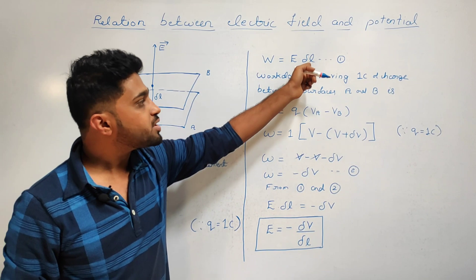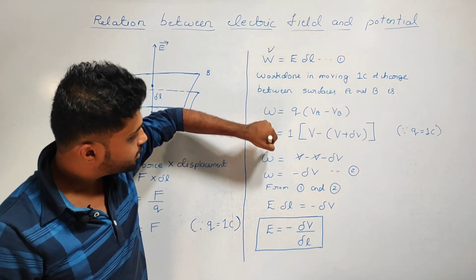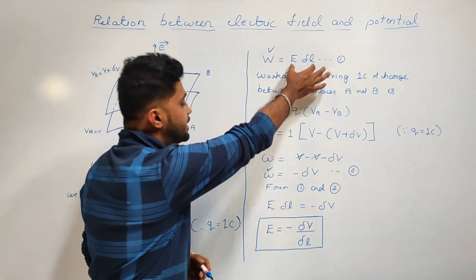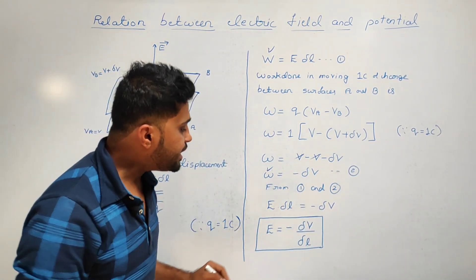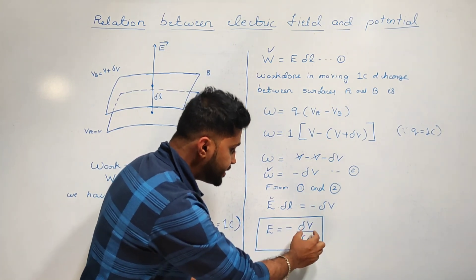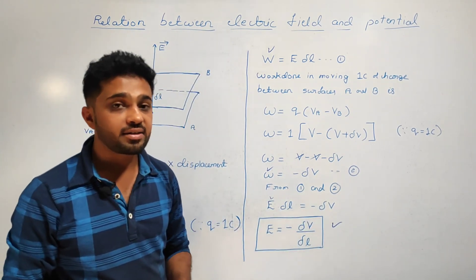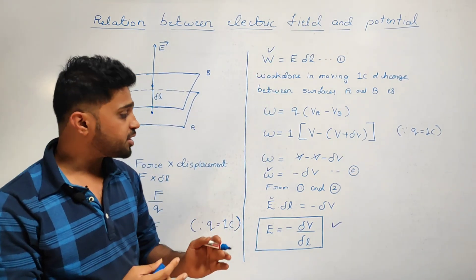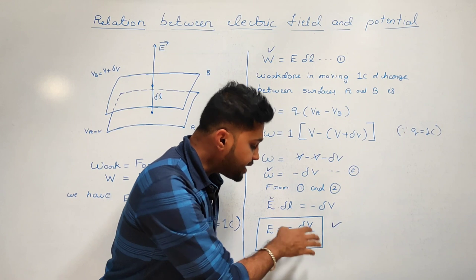Now comparing equation 1 and equation 2, the left-hand sides are both W. So E delta L equals minus delta V, which gives E equals minus delta V by delta L. This expression gives the relation between electric field and electrostatic potential.